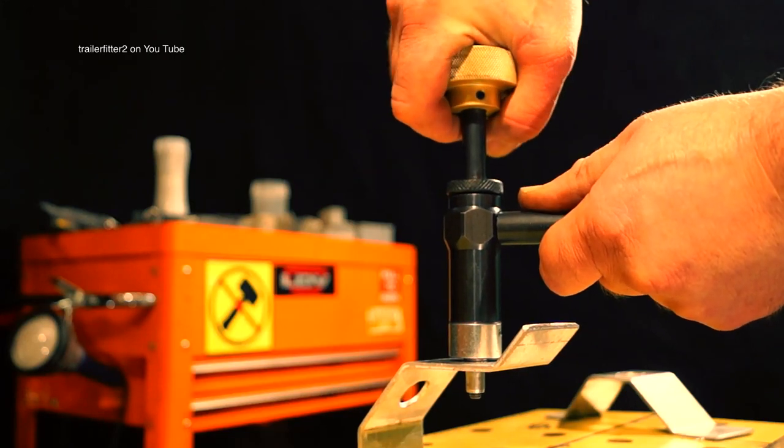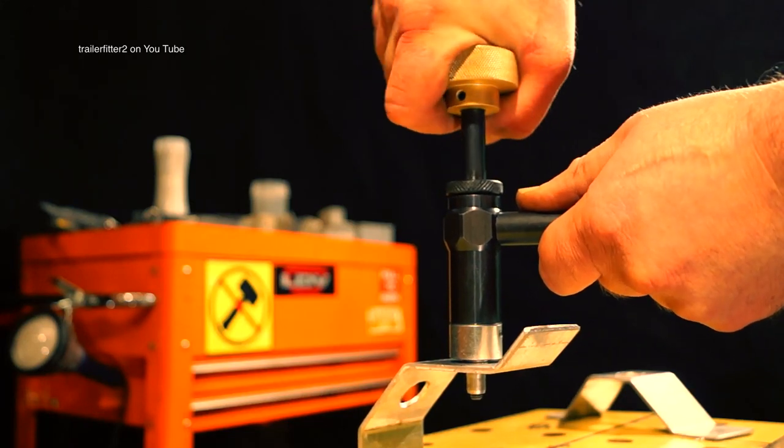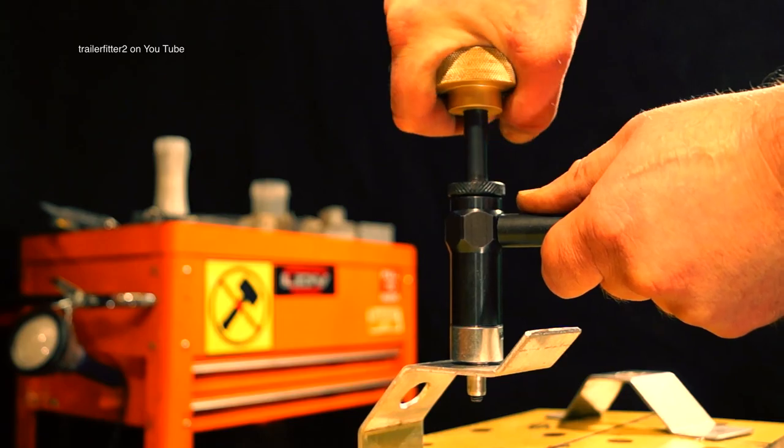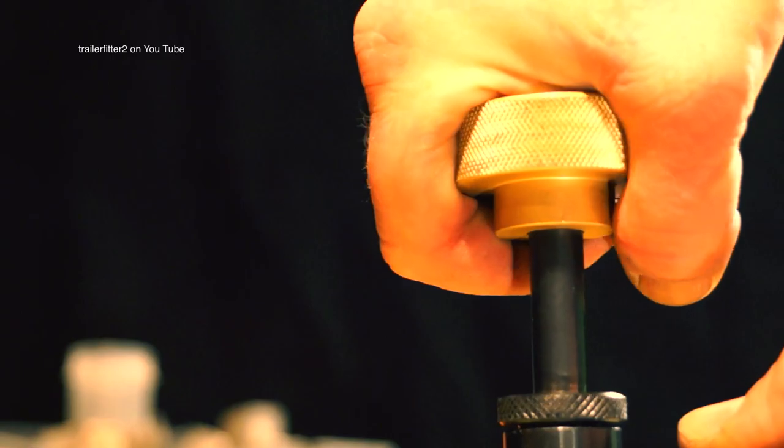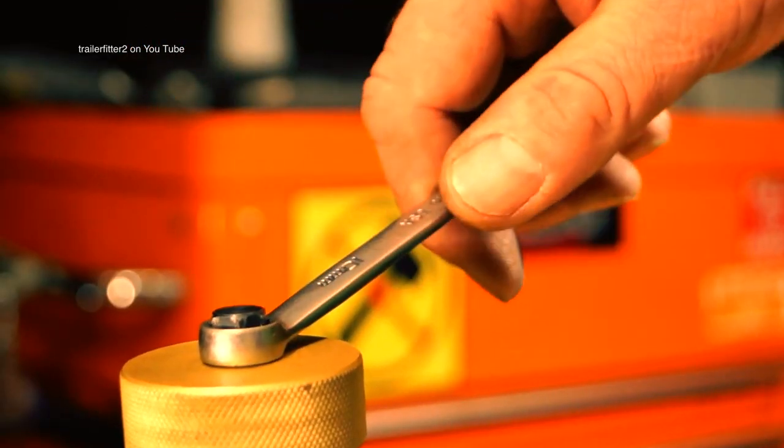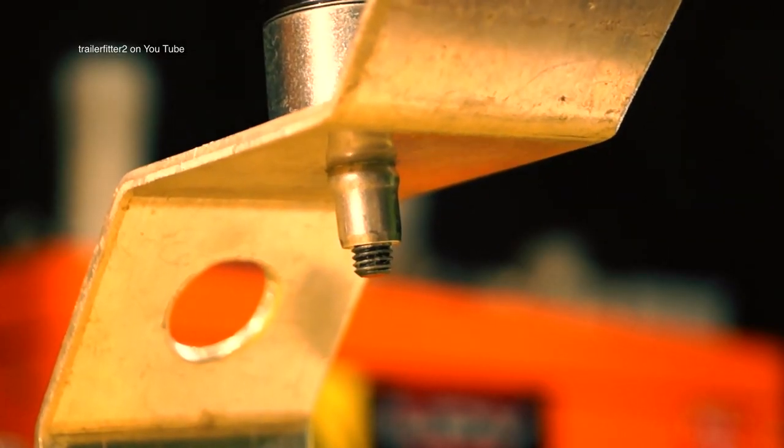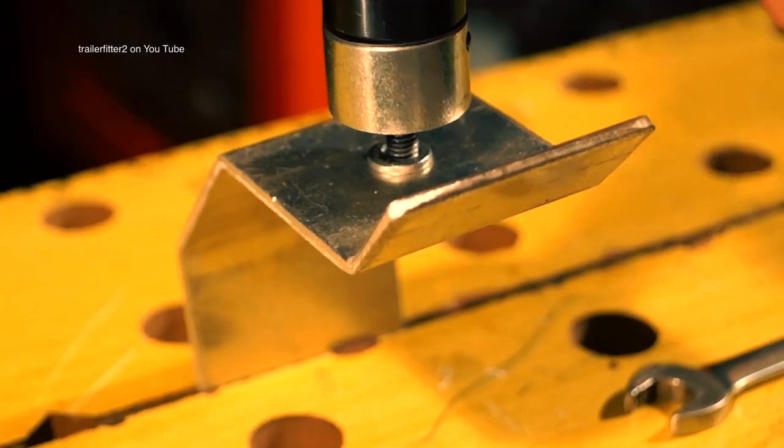A better alternative to using a nut and bolt is the Memfast tool. Now this is a very good tool for doing a repetitive job. You can either use your hand on this or you could use a spanner to pull this up. And you can see that the rivnut is bulging up properly. This one happens to be an M6.